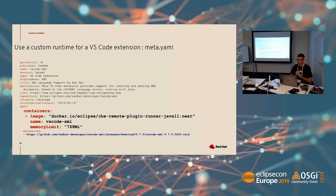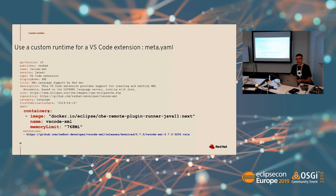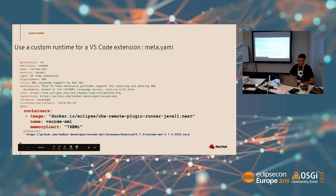Now, how to use a custom runtime for a VS Code extension. Before I showed you the definition of a meta.yaml file — the only difference when you want to use a specific Docker image is that you add the containers inside your meta.yaml and say this is the image I want. This extension will be deployed on a container using this Docker image. Of course you can specify the memory — if the default is not enough, you can specify more memory for every sidecar container.